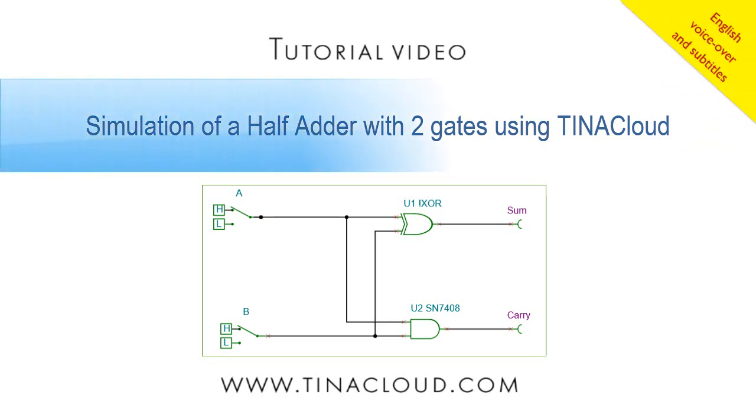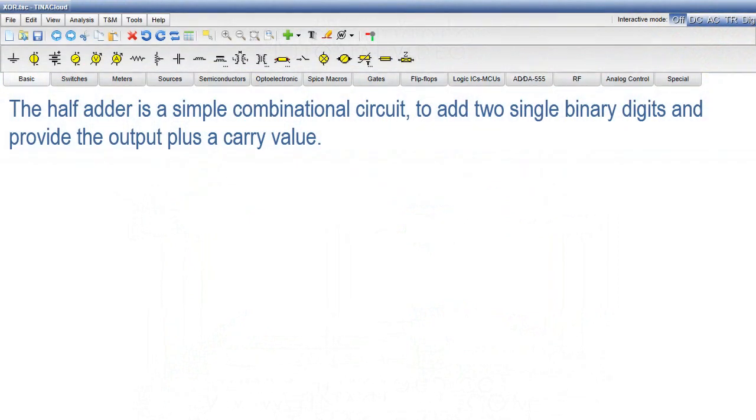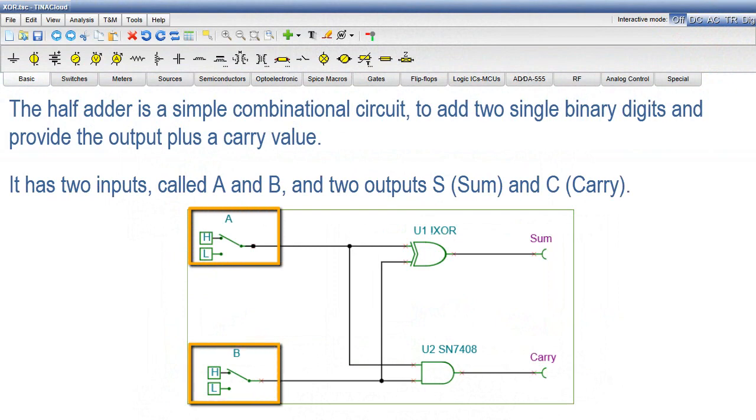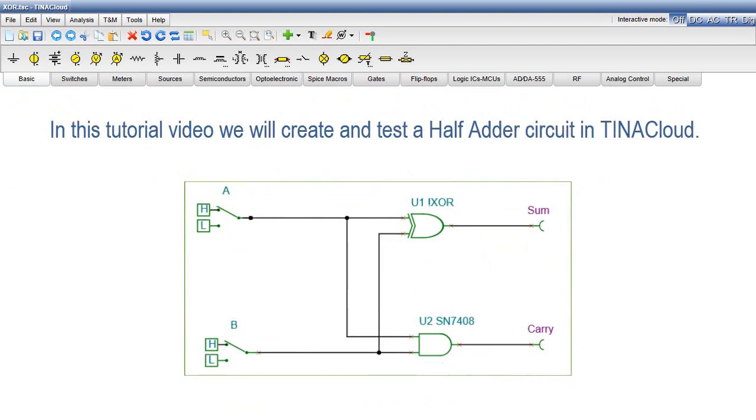Simulation of a half adder with two gates using Tina Cloud. The half adder is a simple combinational circuit to add two single binary digits and provide the output plus a carry value. It has two inputs, called A and B, and two outputs, S (sum) and C (carry).